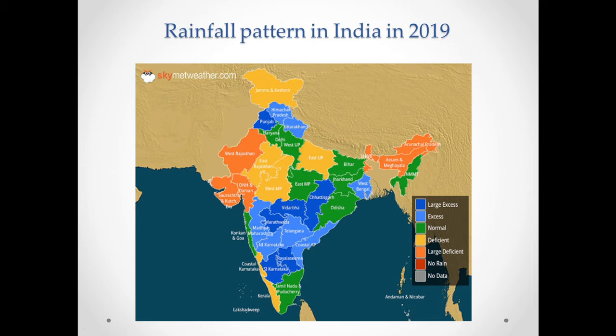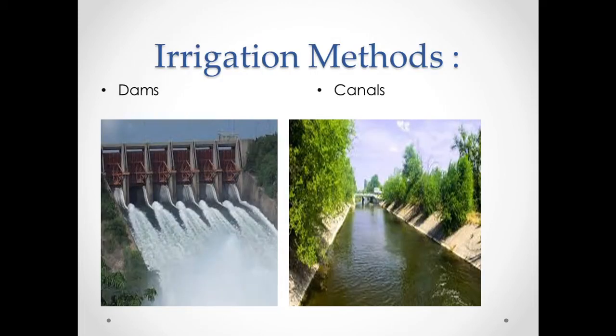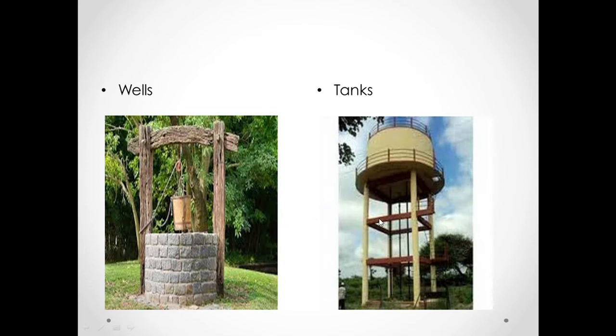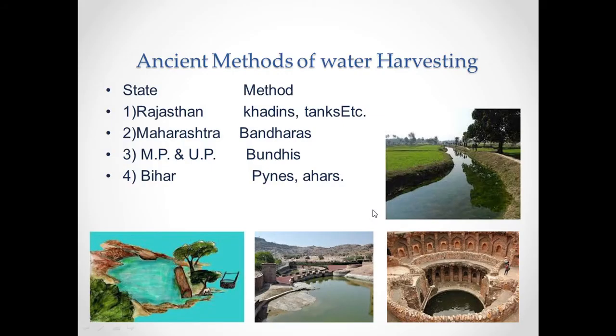A study of rainfall patterns does not reveal the whole truth behind water availability in various regions in India. Rains in India are largely due to the monsoons, which means most of the rain falls in a few months of the year. So there should be water irrigation systems to ensure that water is available throughout the year — for example, dams, canals, wells, and tanks. These irrigation methods ensure that farmers as well as local people get water throughout the year.